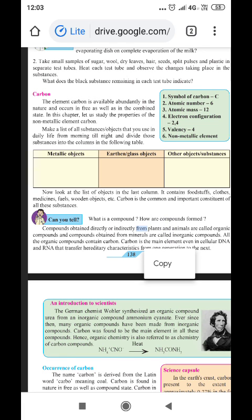Now, look at the list of the objects in the last column. It contains foodstuff, clothes, medicine, fuels, wooden objects, etc. Carbon is the common and most important constituent of all these substances.